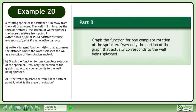In part B, graph the function for one complete rotation of the sprinkler. Draw only the portion of the graph that actually corresponds to the wall being splashed.